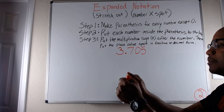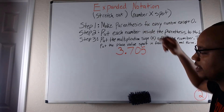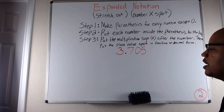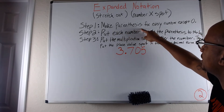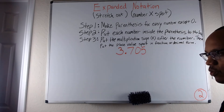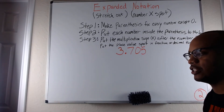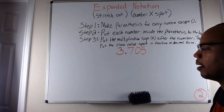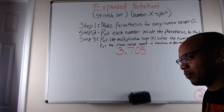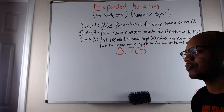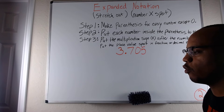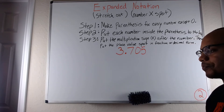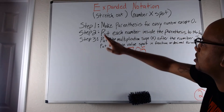I'm going to show a number, expand it, and separate it by place value. Inside the parentheses I'm going to put the number times the spot that it's in. Here are three simple steps: Step one — make parentheses for every number except zero. If you have a three-digit number with no zeros, you need three sets of parentheses. If you have a four-digit number but one digit is zero, you still only make three sets of parentheses, because zero has no value.